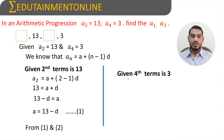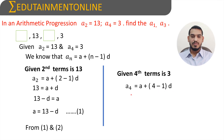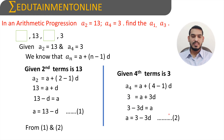Now the fourth term is given as 3. Using the nth term formula, a4 is equals to a plus 4 minus 1 into d. Since a4 is 3, we get 3 is equals to a plus 3d. Transposing 3d to the left hand side, we get a is equals to 3 minus 3d. This is equation number 2.